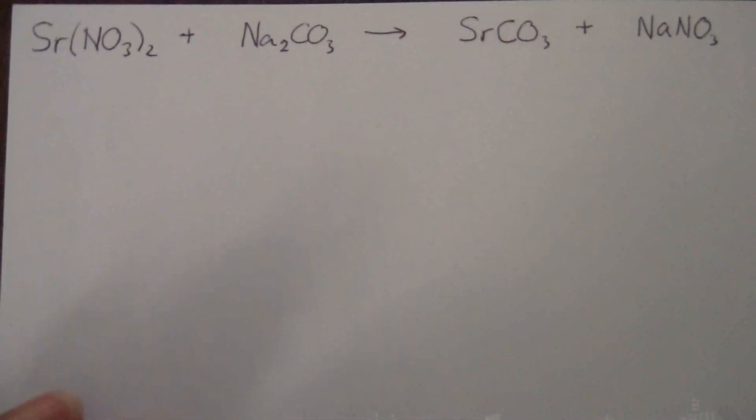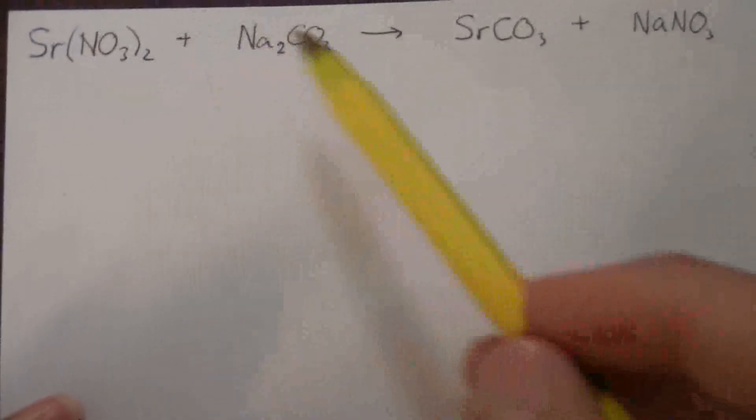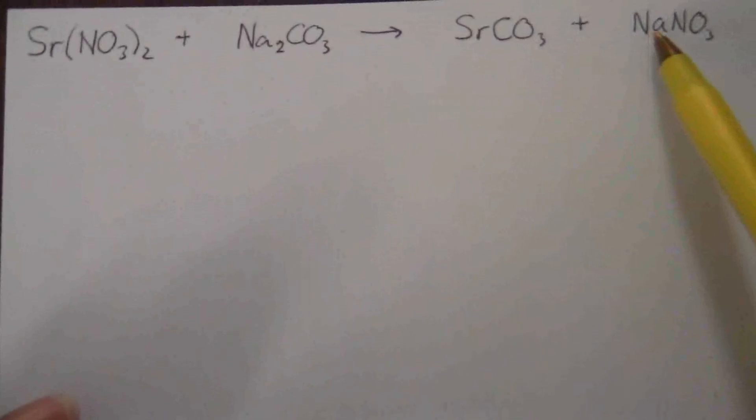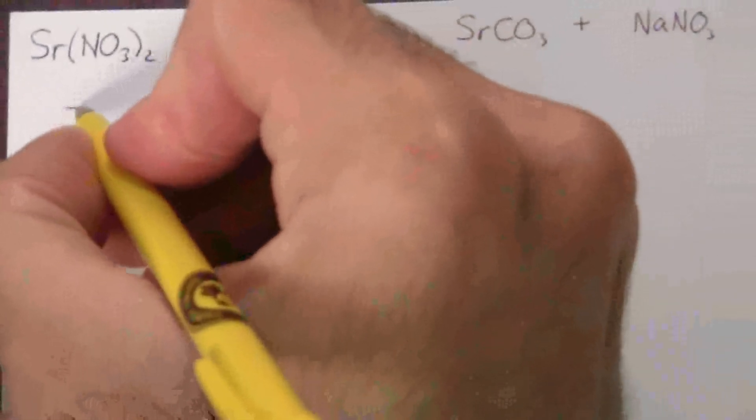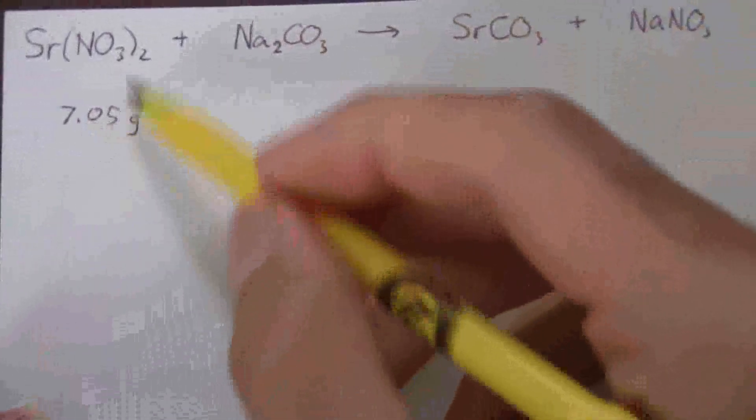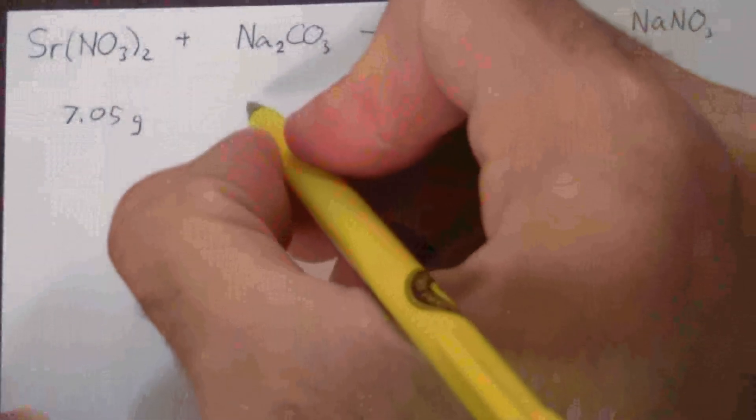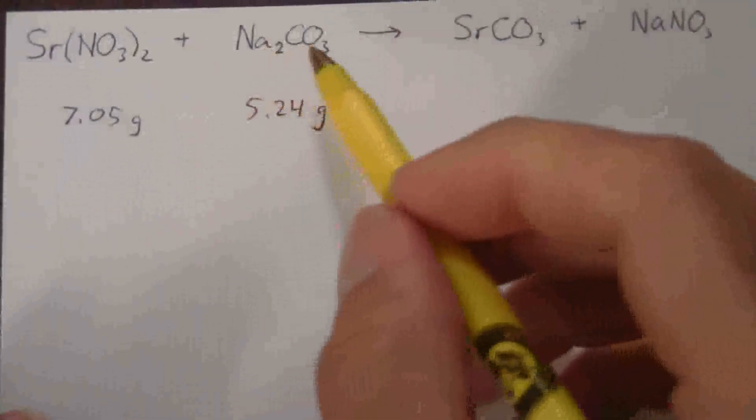Here I have an equation of the reaction of strontium nitrate and sodium carbonate to form strontium carbonate and sodium nitrate. And what we want to do with this equation is let's say I have 7.05 grams of my strontium nitrate and I'm reacting that with 5.24 grams of sodium carbonate.